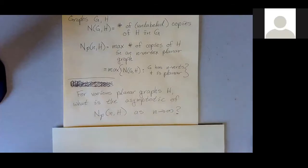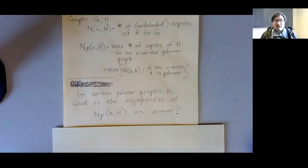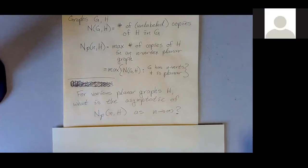Question: by copies, do you mean induced or just subgraph? Just subgraphs. So the clique has every graph on at most that many vertices as a copy.